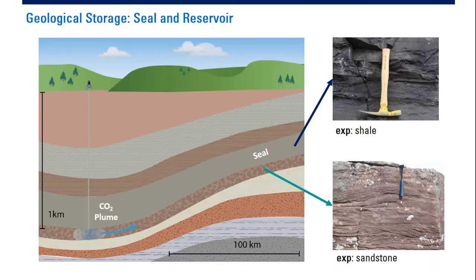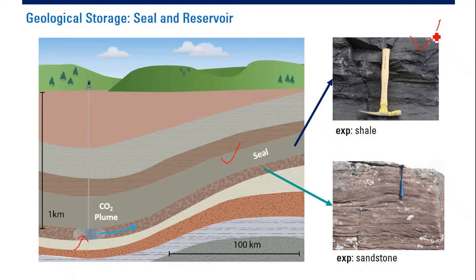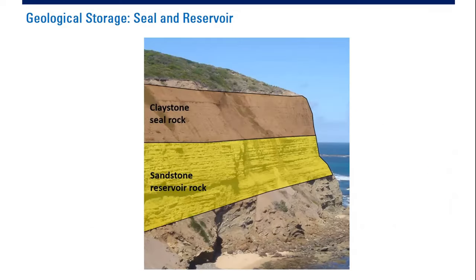So this is the storage complex. This is another depiction: you inject CO2, and the flow of CO2 in the reservoir will be called the CO2 plume. To be a good storage, it is good if we have cap rock or seal. Most of the time the seal is shale rock, and the reservoir can be limestone or sandstone. Sandstone will be a good zone because it's porous and it's permeable.